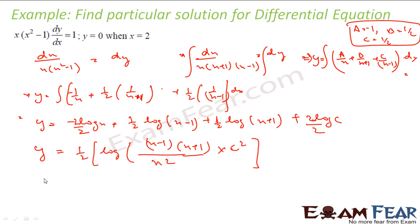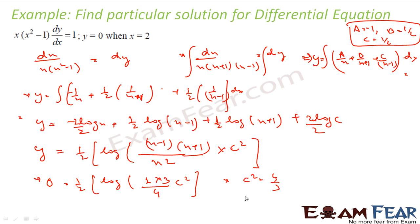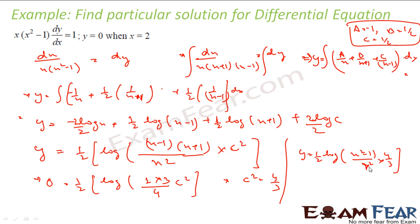I am told y = 0 when x = 2. Putting these values: 0 = (1/2)·log[(4−1)/(4·c²)] = (1/2)·log[3/(4c²)]. Solving gives c² = 4/3. Substituting c² = 4/3 into the solution, the final particular solution is y = (1/2)·log[(x²−1)/(x²)] with c² replaced. Since there is no remaining arbitrary constant, this is the particular solution.